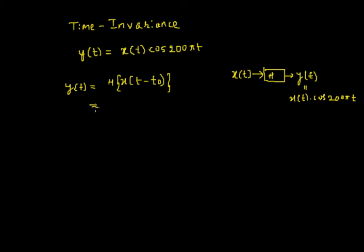As per the nature of the system, the input is x(t-t₀). It multiplies this with cosine of 200πt and gets you the output. This is what I get in the first half.